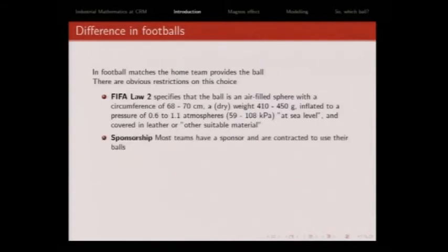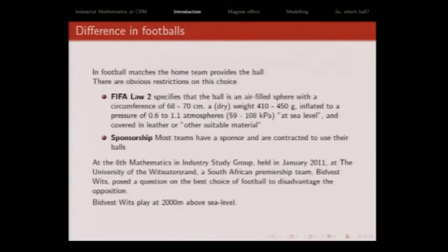Probably the strictest restriction is from the team sponsors. Most teams are sponsored, and the sponsor provides the ball because they want their ball to be seen on television. This was the big restriction - the football team were sponsored by Nike. So we just had a choice of Nike balls. The team is called Bidvest Wits. They're called the Clever Boys. It was kind of nice that they came to a university with a problem. The important thing is they play in Johannesburg, which is 2,000 meters above sea level.